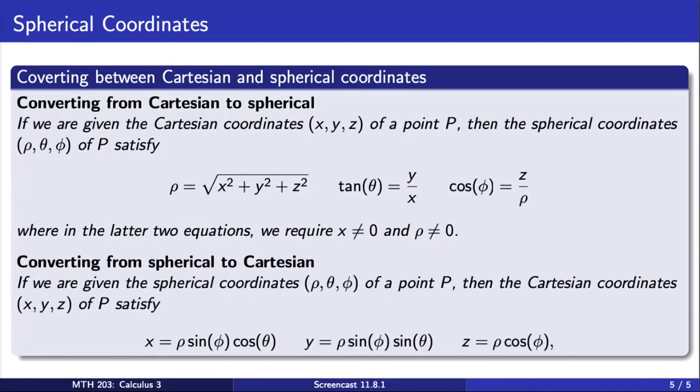On the other hand, converting from spherical to Cartesian: if we are given the spherical coordinates (ρ, θ, φ) of a point P, then the Cartesian coordinates (x, y, z) of P satisfy the following three equations. First, x equals ρ sin φ cos θ. Y is ρ sin φ sin θ. And lastly, z is ρ cos φ. Thank you.